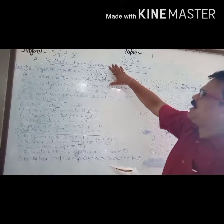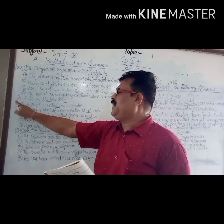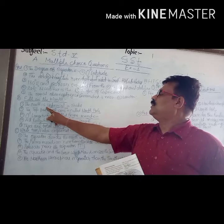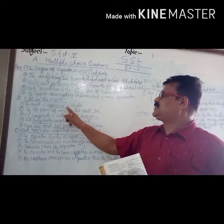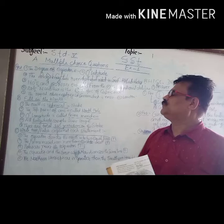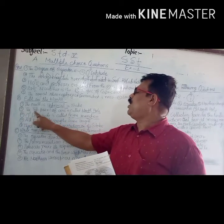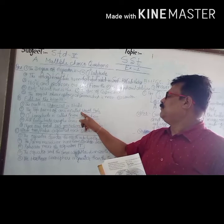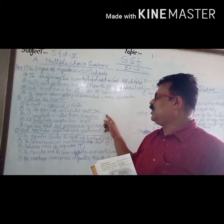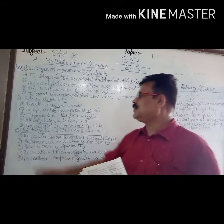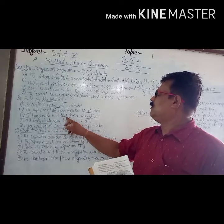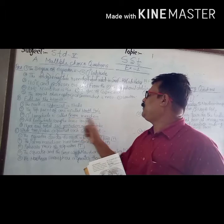Now Question Number B — Fill in the Blanks. Number 1: The Earth is — answer: Spherical in shape. Underline this. Number 2: The top axis is called — answer: North Pole. Underline North Pole. Number 3: 0 degree longitude is called — answer: Prime Meridian. Underline Prime Meridian.